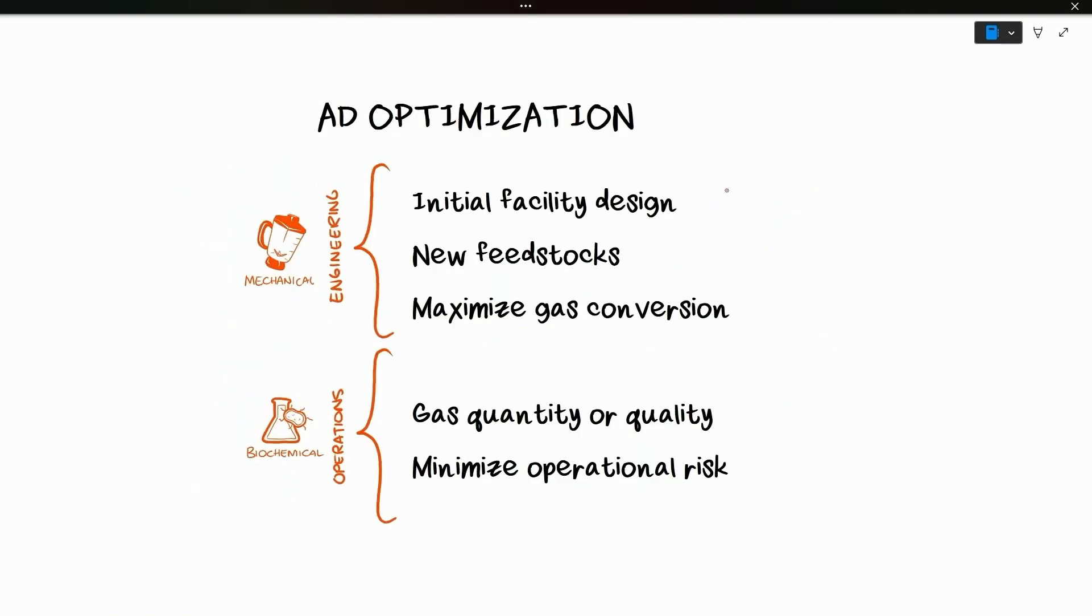To optimize your AD process, you can approach it mechanically or biochemically. On the mechanical side, you're going to do some optimization engineering when you're doing the initial design of the facility, or you're considering getting new feedstocks that weren't in your initial design, or you're wondering if you can maximize the feedstock to gas conversion in your current facility to increase your throughput and revenue. On the biochemical side, you're doing some operations optimization when you want to improve your gas quantity or quality, or you want to minimize the risk of biological upsets, foaming, and other operational headaches.